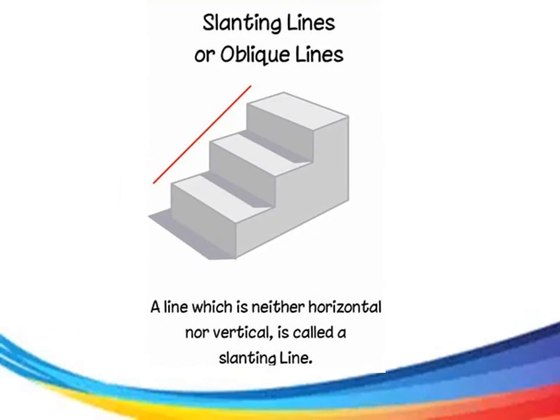Planting line, or oblique line. A line which is neither horizontal nor vertical is called a planting line.